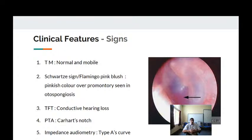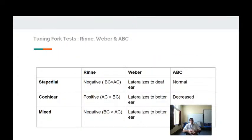Various tests are performed to assess hearing: the Rinne test, impedance audiometry, and pure tone audiometry. In stapedial otosclerosis, the Rinne test is negative — bone conduction is better than air conduction, lateralized to the deaf ear — and the Weber test lateralizes to the affected side. In cochlear and mixed otosclerosis, the results differ accordingly.